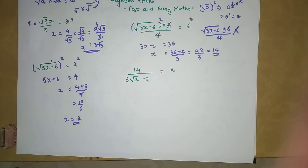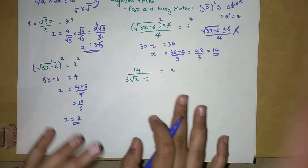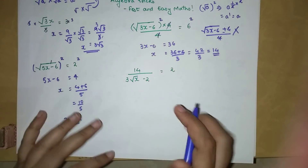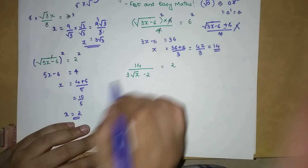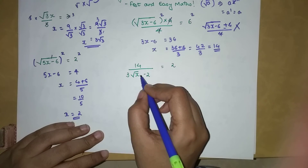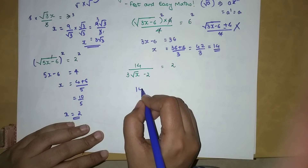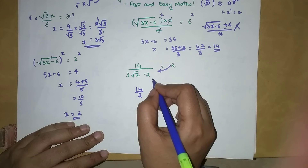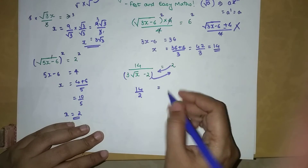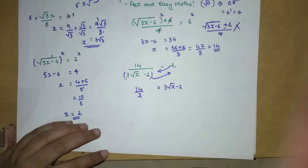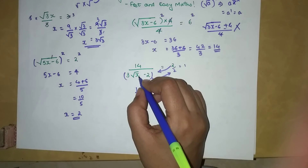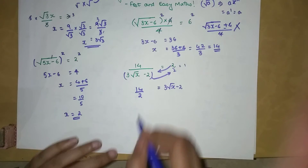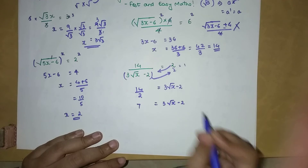The next one is a bit tricky. When you have numbers in both numerators and a variable expression in a denominator, the first step is to cross-multiply: shift the denominator to the other side and the numerator to the other side. Dividing both sides by 2, we get 7 = 3√x − 2.